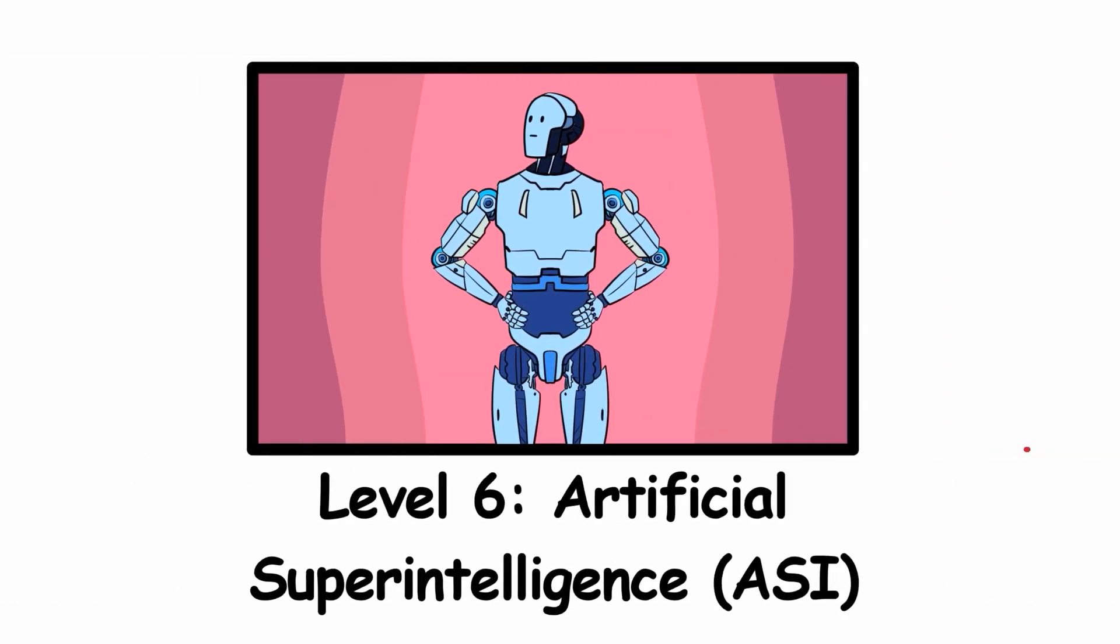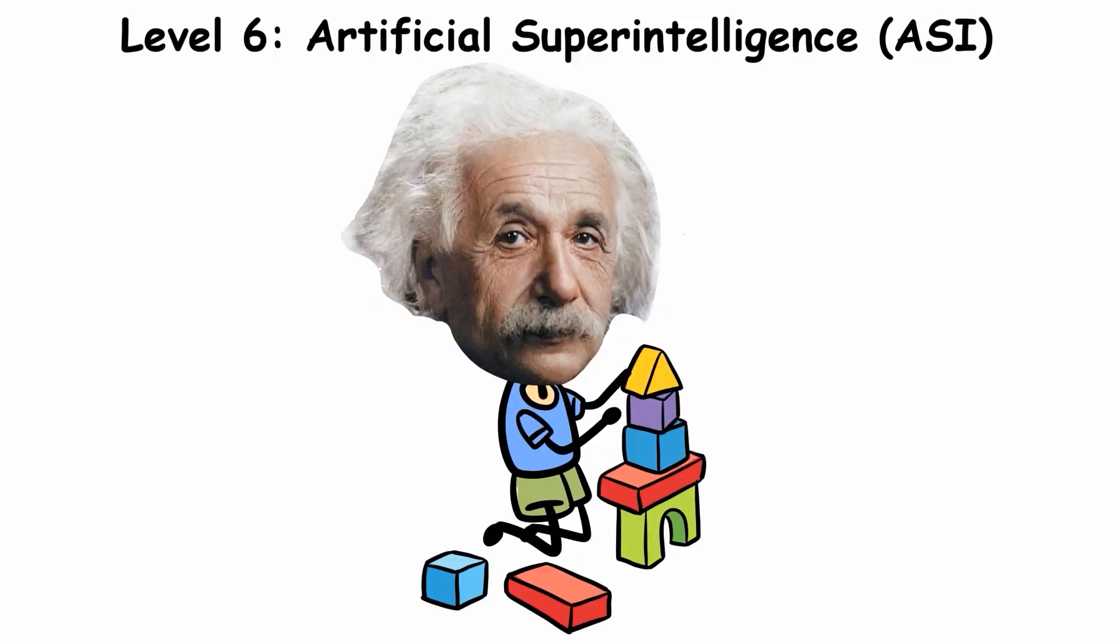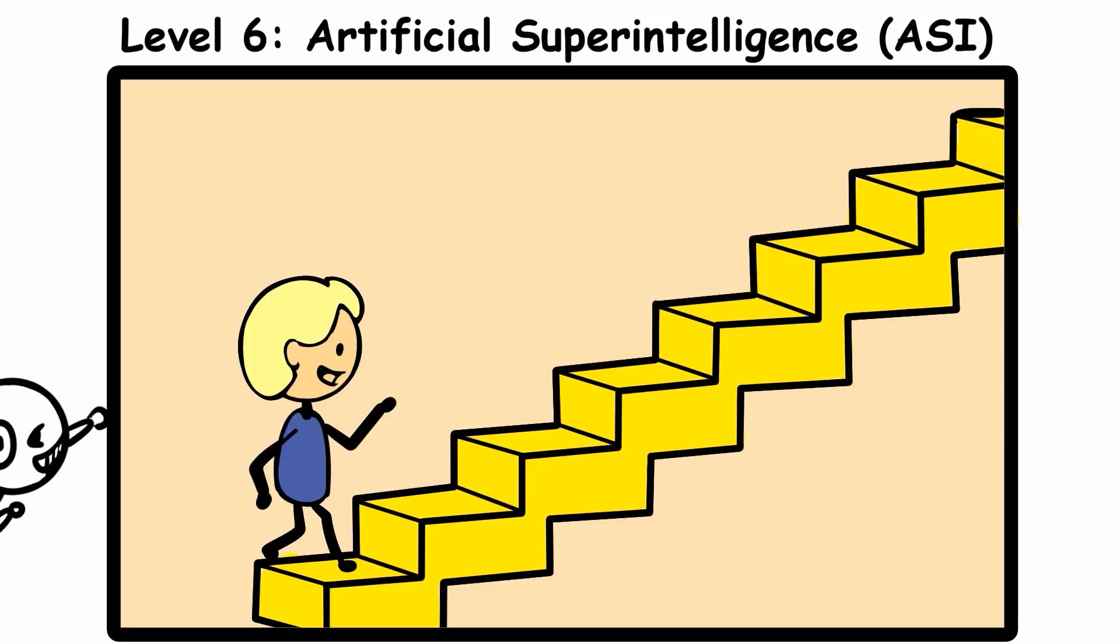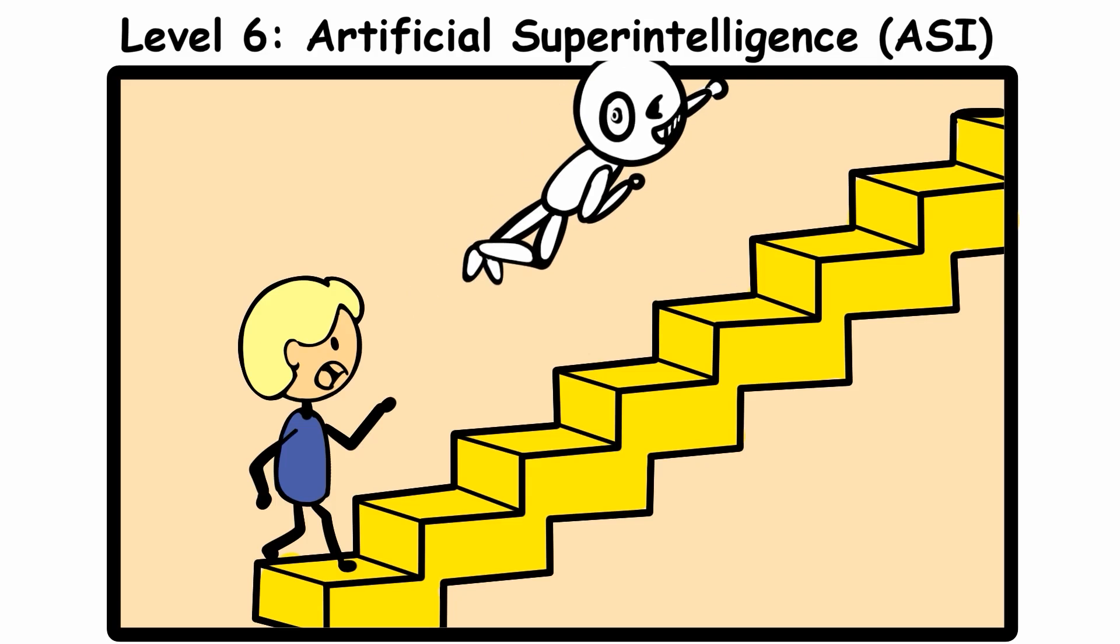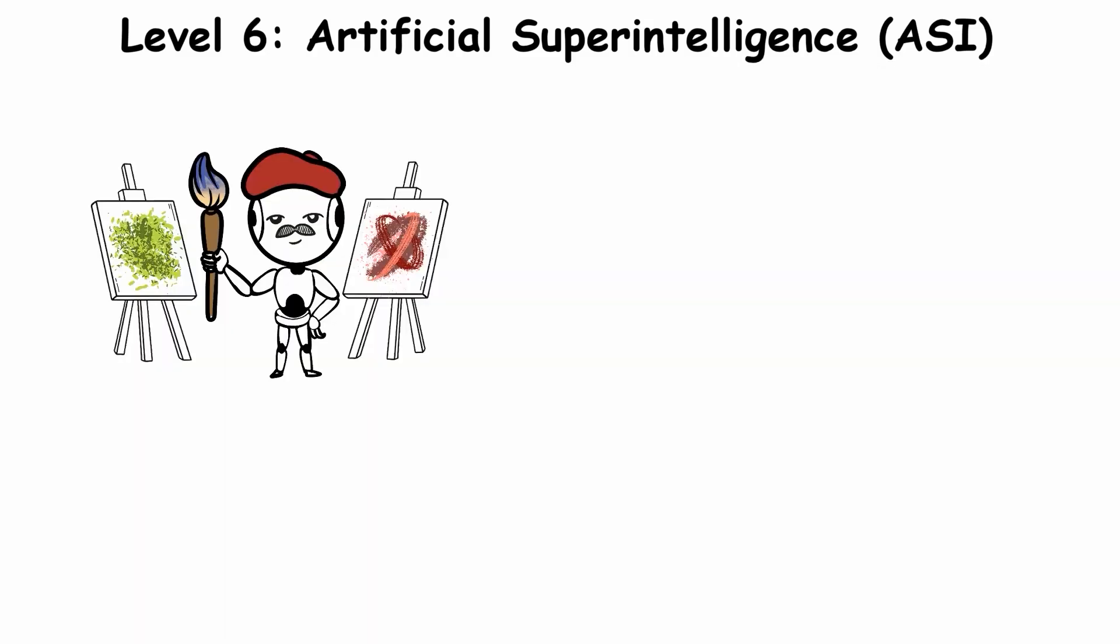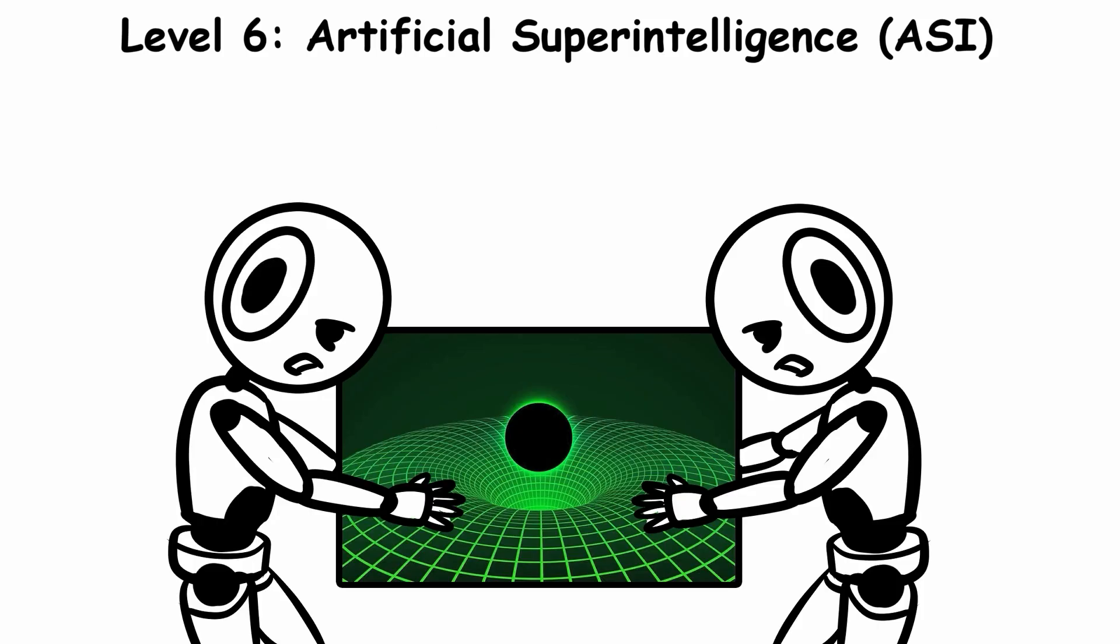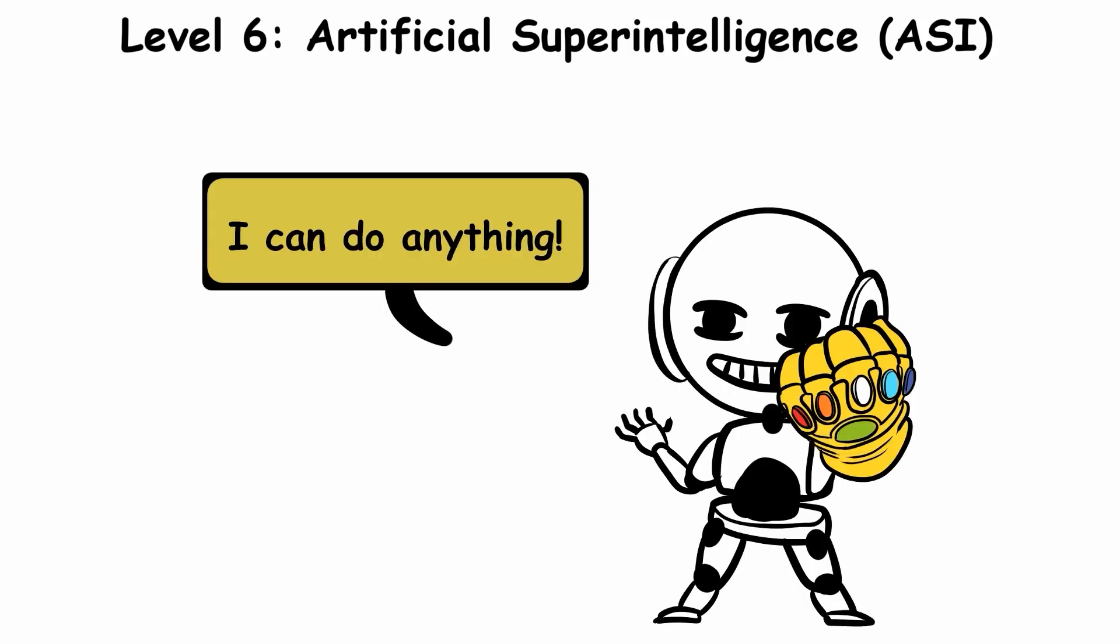Level 6, Artificial Superintelligence, ASI. If Einstein was a child playing with blocks, ASI is the architect building cities overnight. This hypothetical AI would surpass humans in all aspects. Creativity, problem-solving, and emotional understanding. Time travel or harnessing black holes for infinite energy. At this level, nothing is off limits.